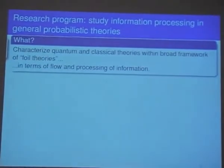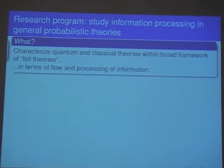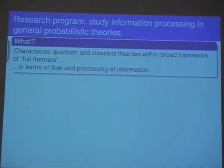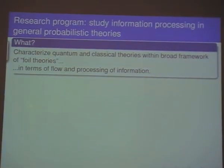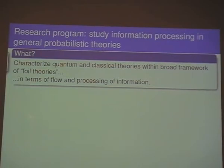It's part of a general program where we're trying to characterize quantum and classical theory within a broad framework of what Rob Spekkens likes to call the foil theories — theories that may not be intended to really describe reality, but help us understand quantum theory and classical theory. When I say classical theory, I mean classical probability theory, not simplified technologies. We try to understand these things by understanding in part what they could have been but are not.